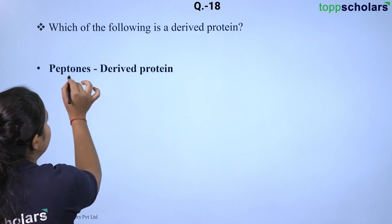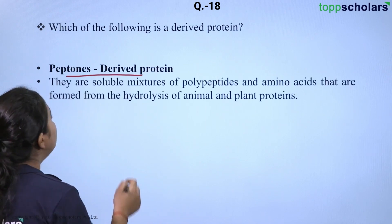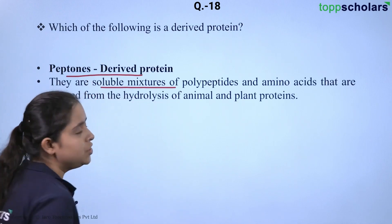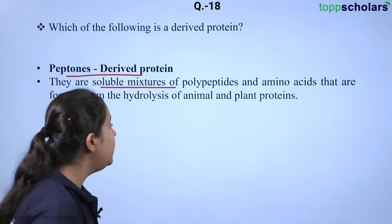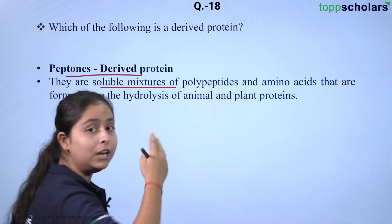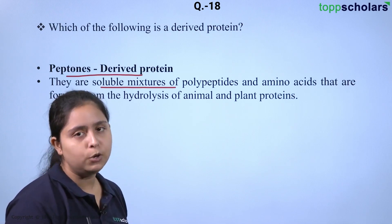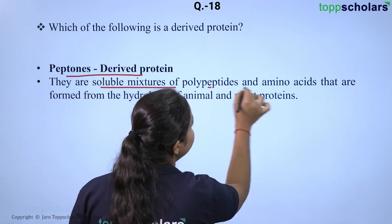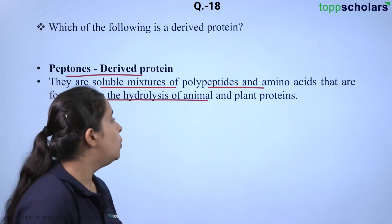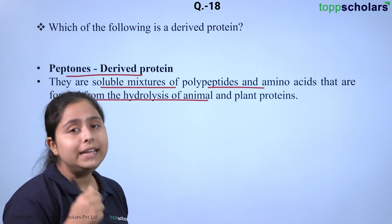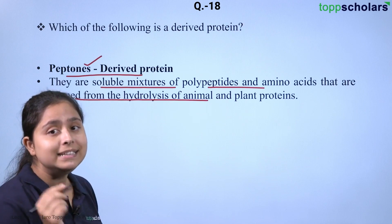Peptones are derived proteins. Peptones are soluble mixtures of polypeptides and amino acids. You might know proteins are made up of amino acids. The peptide bond joins two adjacent amino acids. Peptones are soluble mixtures of polypeptides formed from the hydrolysis of animal and plant proteins. Hence these are the derived proteins.